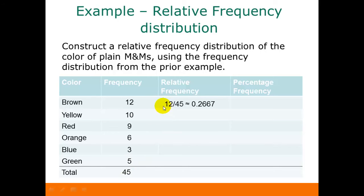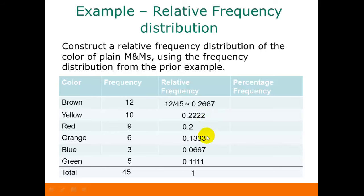So our first one is going to be 12 divided by 45, which gives us approximately 0.2667. Then we divide 10 by 45, 9 by 45, 6 by 45, 3 by 45, and 5 by 45 to get the rest of our relative frequencies. Once you have all these calculated, you can check your answer by adding up all of the relative frequencies — it should come out to be 1 or something very close to it. With rounding error, you might get 0.99 or 1.01, but it should be very close to 1.